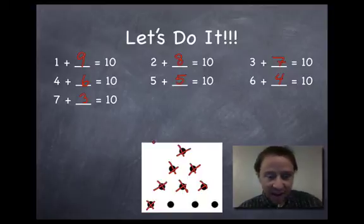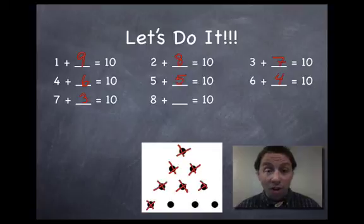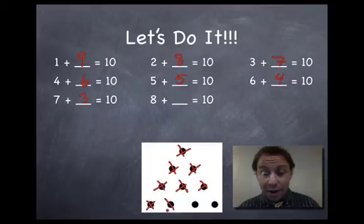Are you seeing a pattern? Yeah there is a pattern here. Look these red numbers are getting smaller as the white numbers are getting larger and that is going to continue when we cross out our eighth dot. 1 2 3 4 5 6 7 8.